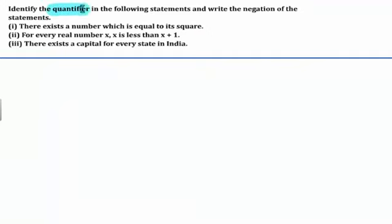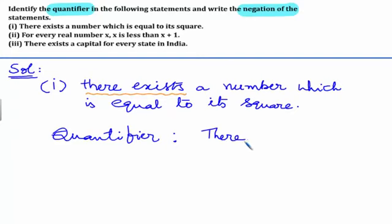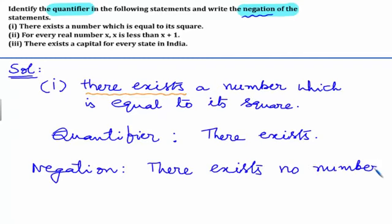In this problem, we have to identify the quantifier and also write the negation of the given statements. The given statement is: there exists a number which is equal to its square. The quantifier is 'there exists.' The negation of the given statement is: there exists no number which is equal to its square.